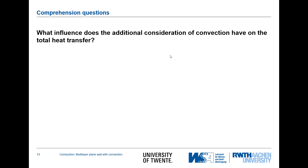To summarize: what influence does the additional consideration of convection have on the total heat transfer? While convection generally increases heat transfer in problems like the Rayleigh-Bénard case, here the convective boundary resistances act as additional thermal resistances, which reduce the heat transferred from the room to the outside. Thank you very much for your attention and see you in the next video.